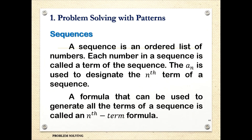So we have sequences. A sequence is an ordered list of numbers. Each number in a sequence is called a term of the sequence. The notation a-sub-n is used to designate the nth term of a sequence, meaning the location of the given number. A formula that can be used to generate all the terms of a sequence is called the nth term formula.